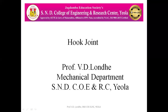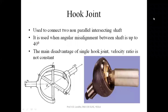Today we are going to see the hook joint and its application where it is being used practically. The hook joint is used to connect two non-parallel intersecting shafts, and it is used when there is some slight angular misalignment between the input and output shafts.